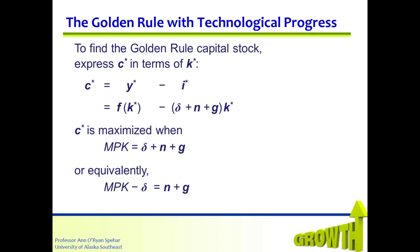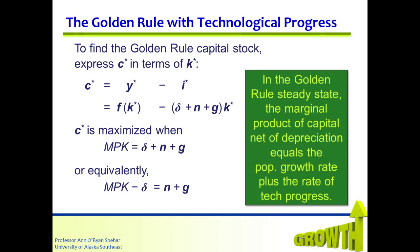Because actual economies experience both population growth and technological progress, we have to use this criteria to evaluate whether they have more or less capital than they would at the golden rule steady state. In the golden rule steady state, the marginal product of capital net of depreciation equals the population growth rate plus the rate of technological progress.